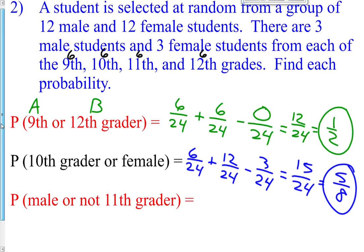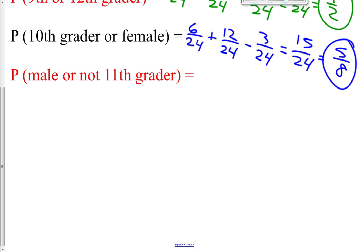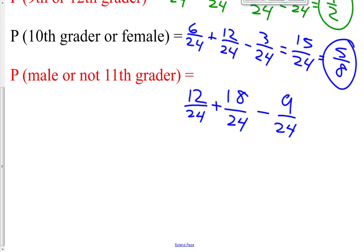Find the probability of selecting a male or not an eleventh grader. The probability of a male is 12/24. Plus students that are not eleventh grade: there are 6 eleventh graders, so 18 students are not eleventh grade. Subtract the overlap — males who are not eleventh grade: three freshmen, sophomore, and senior males each, so nine total. Twelve plus eighteen minus nine is 21/24, which reduces to seven eighths.